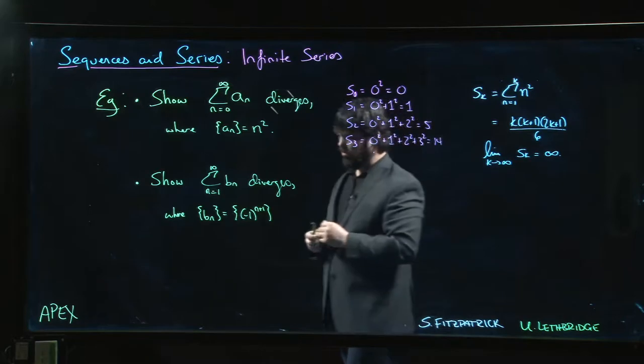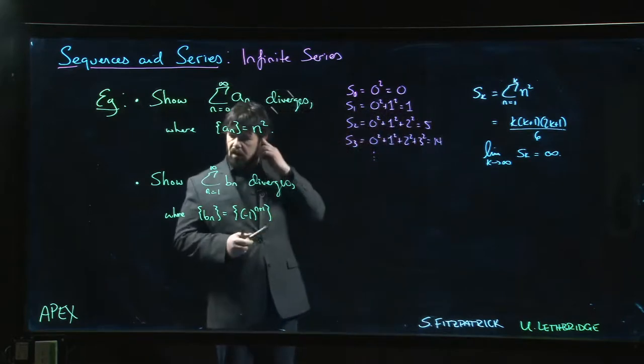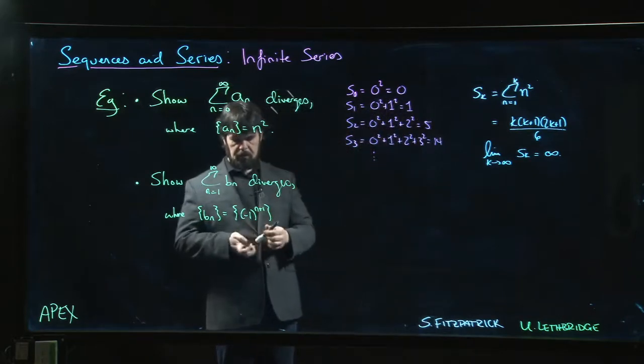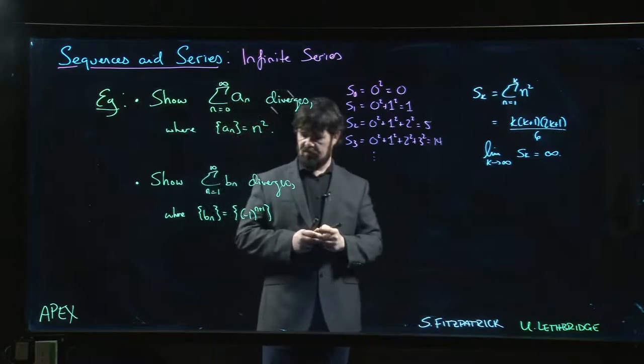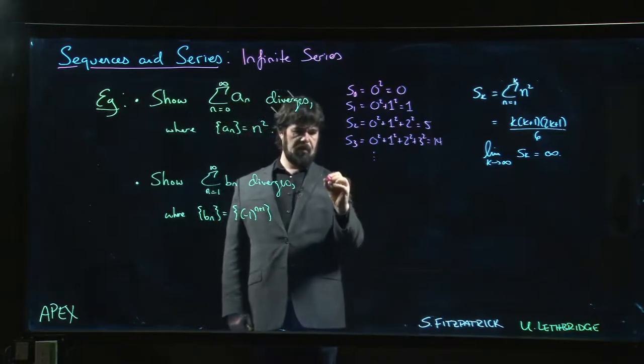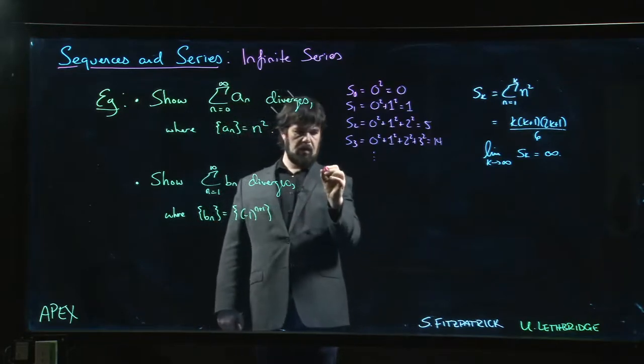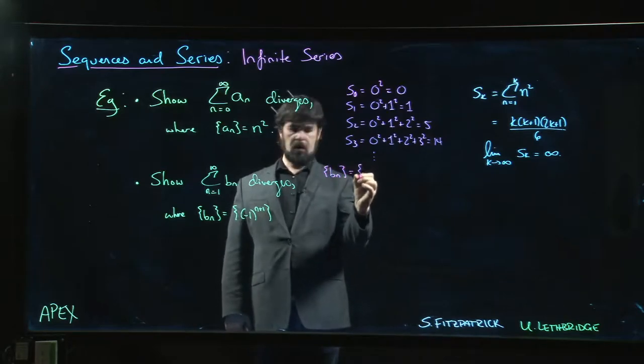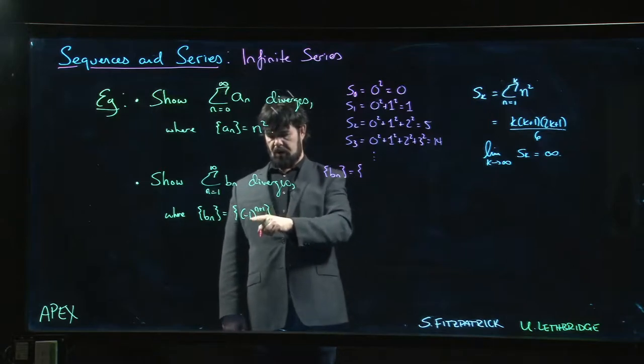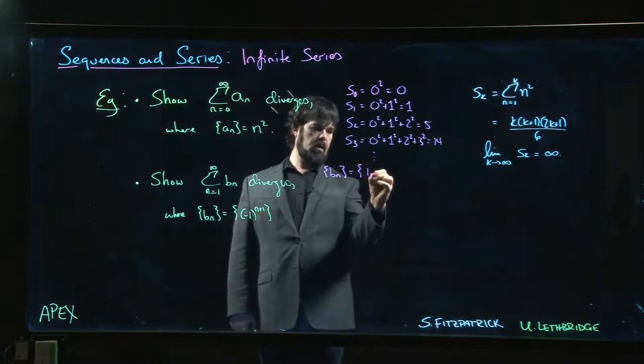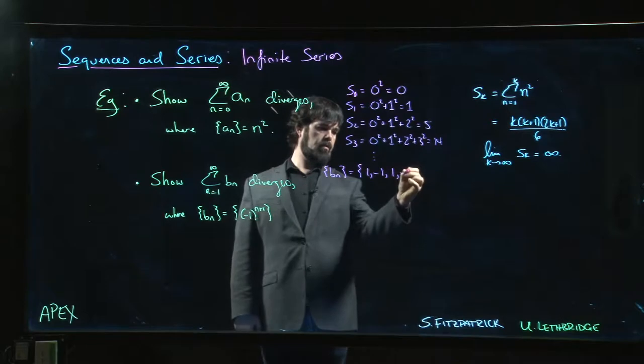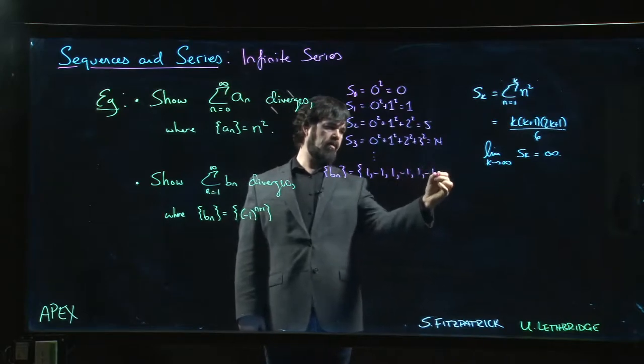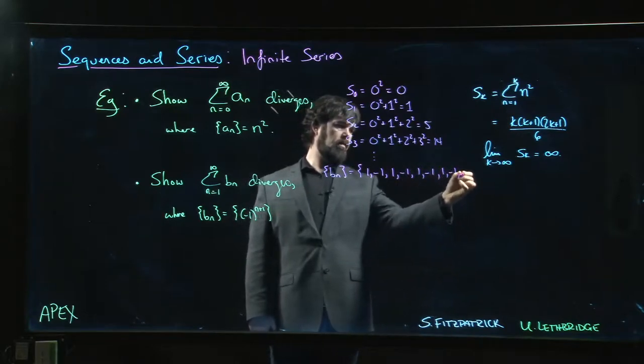How about this one here? Let's start writing out what the sequence looks like. bn, when n equals one, is minus one squared, so one. And it's going to be minus one, one, minus one, one, minus one, one, and so on forever.